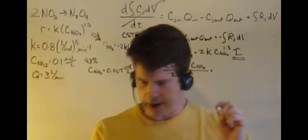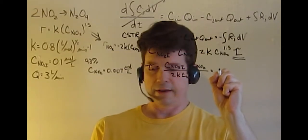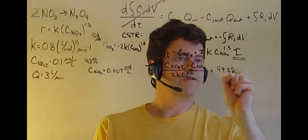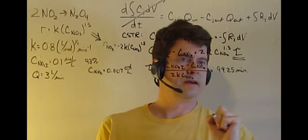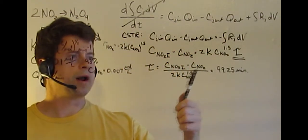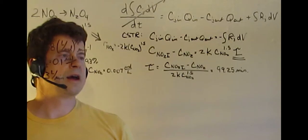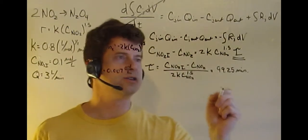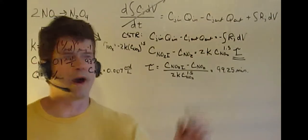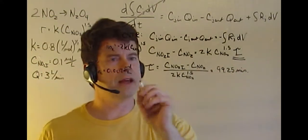We plug those into our calculator, and that gives us 99.25 minutes. Certainly in this case, since we've been given what we want for a final concentration, that makes the algebra much easier rather than when we have to solve for what our final concentration is given the other values.